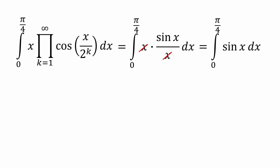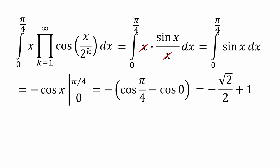The antiderivative of sine x is negative cosine x, and evaluating from 0 to pi over 4, we get the following, which simplifies to negative square root of 2 over 2 plus 1.